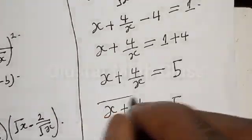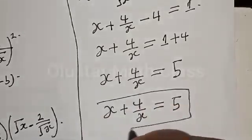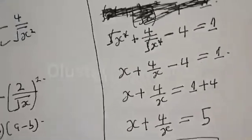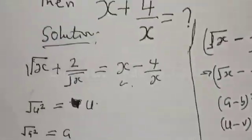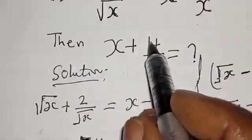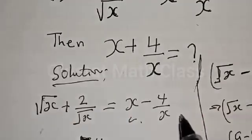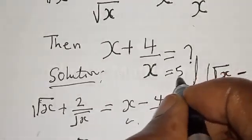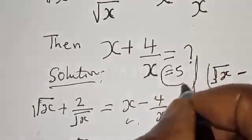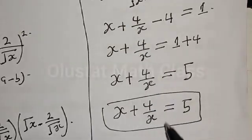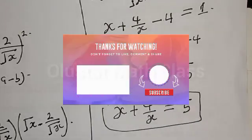Our final answer is s plus 4 divided by s equals 5. And we know from the initial question we were asked to find the value of x plus 4 divided by x, which is equal to 5. If you have enjoyed the class, please don't forget to like, share, comment, and subscribe. Thank you.